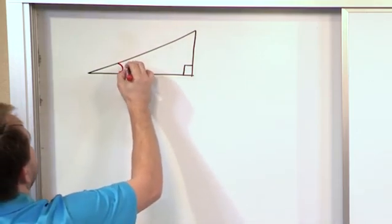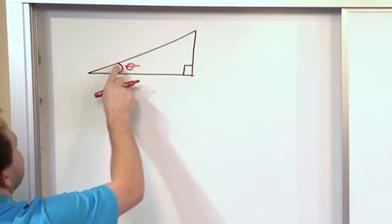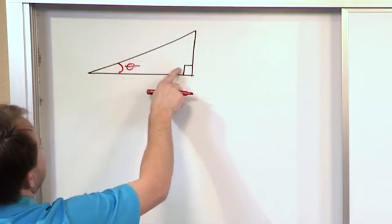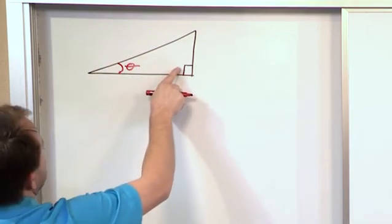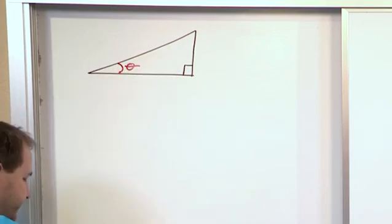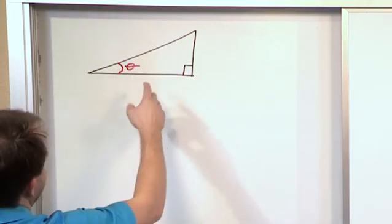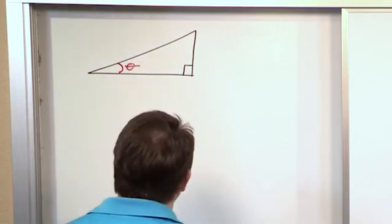This angle, let's call it this angle here that's basically opposite of this 90 degree angle here. We're going to call it angle theta, which is just like a variable. We could call it angle x, but usually you call it angle theta.